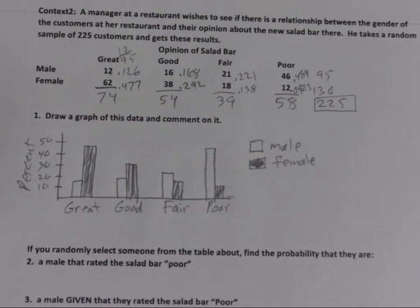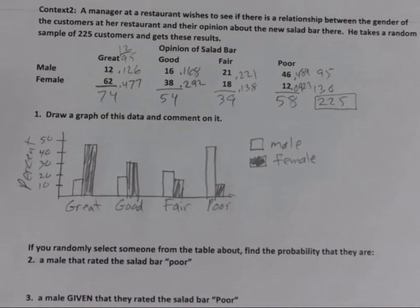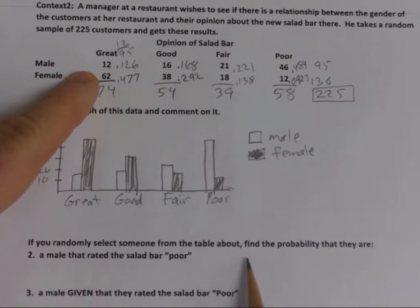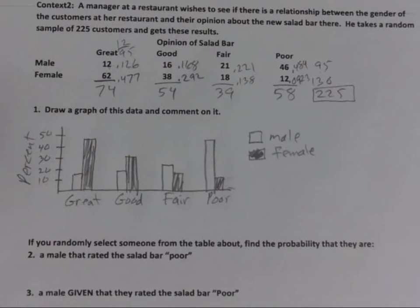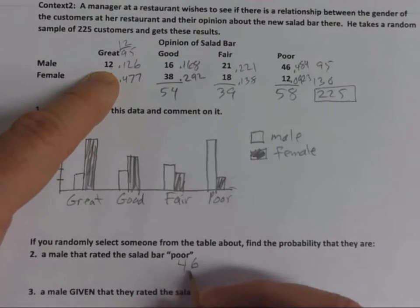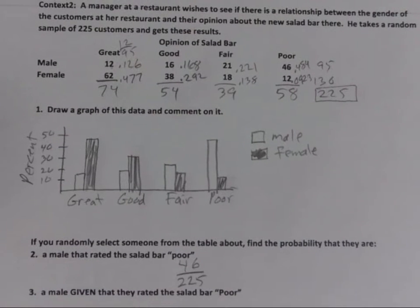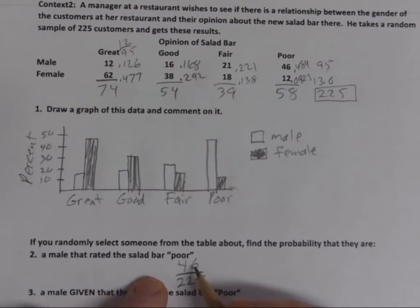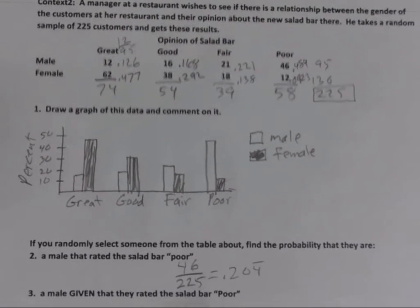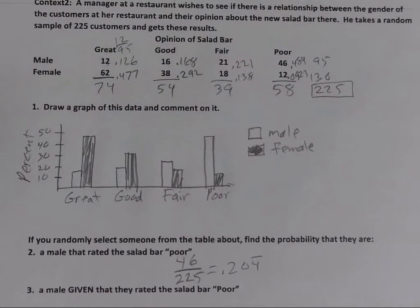Now a couple of probability problems using the two-way table. If you randomly select someone from the table, find the probability they are a male that rated poor. The number of males that said poor is 46, over the total of 225. So the probability is 46/225, which equals approximately 0.204. You don't have to write the decimal — the fraction is considered showing your work.